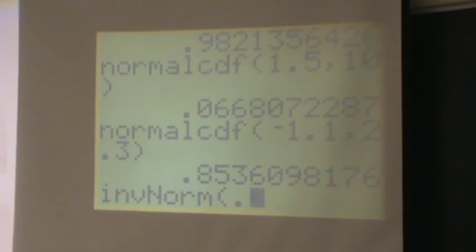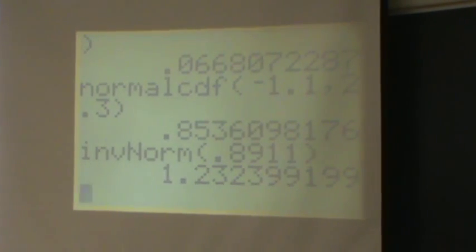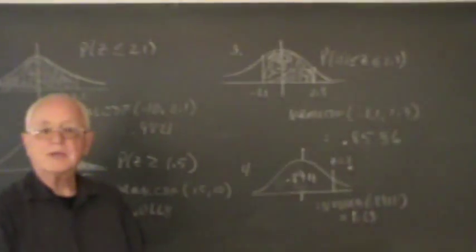So we'll type in 0.8911, parenthesis, and we find a Z of 1.23.